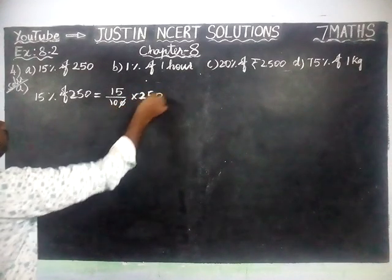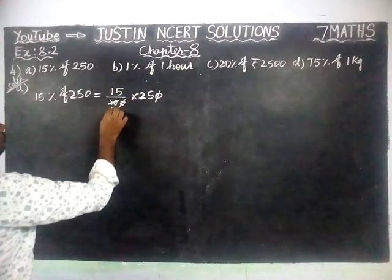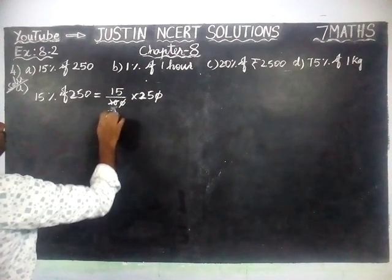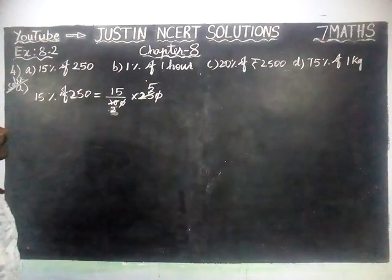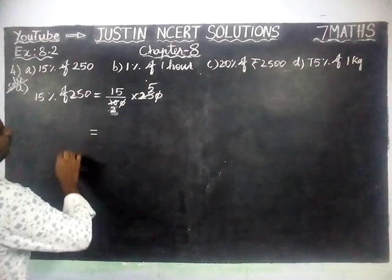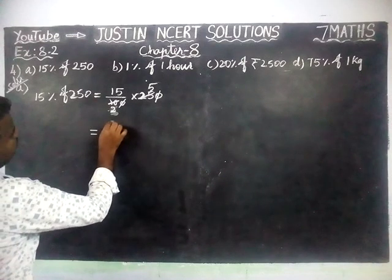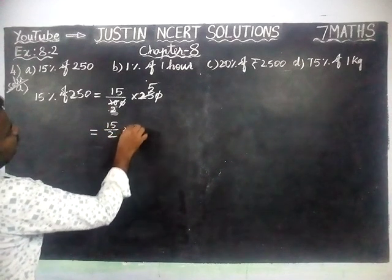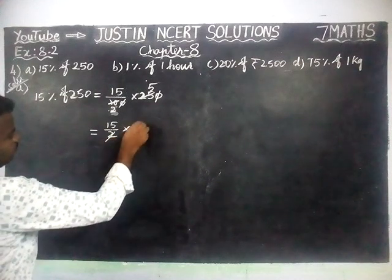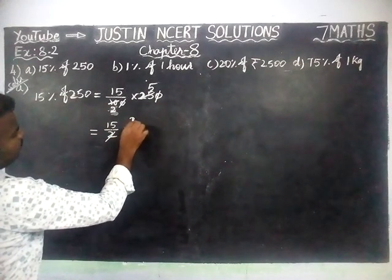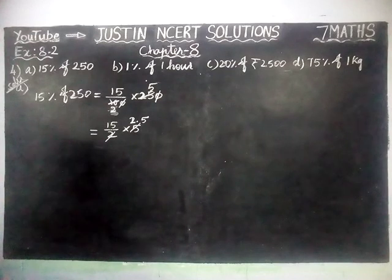Now we can cancel the zeros — 0, 0 cancelled. Then 5: 2 fives are 10, 5 fives are 25. Now again we are going to simplify. We have 15 by 2 into 5. Dividing gives us 1, then 2 is 2, and 2 fives are 5.